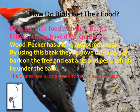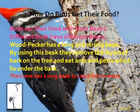How do birds get their food? It is very interesting to observe birds' food habits. They eat their food with their beaks. Different birds have different beaks. The woodpecker has a long and strong beak — by using this it removes the layers of bark of the tree. The bark is the outermost layer of the tree, and the woodpecker eats ants and pests lying under the bark. The crane has a long beak to catch fish in water. Can you see the picture — woodpecker and crane? Look at their beaks.